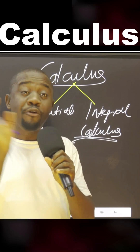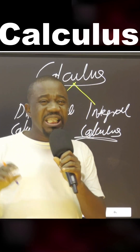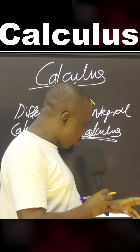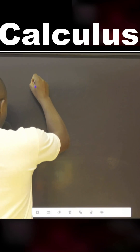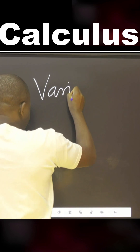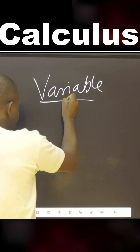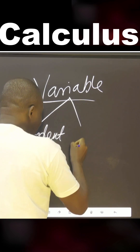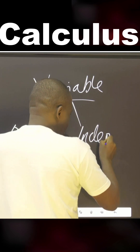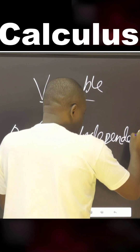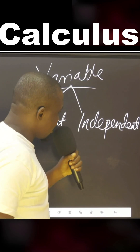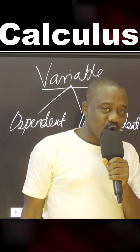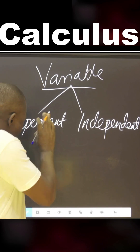Before you learn any calculus, the first thing any teacher should teach you is about two types of variables — very important. That is the dependent and the independent variables. These types of variables are very important for you to understand calculus.